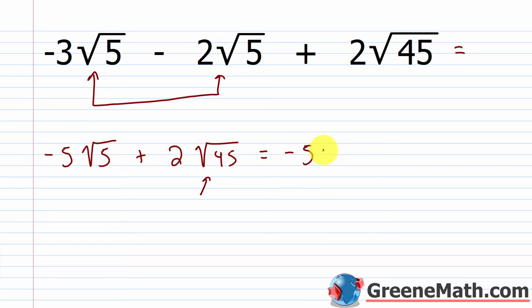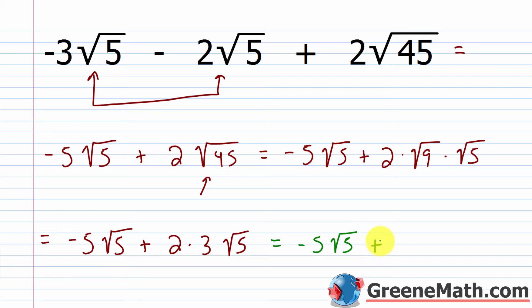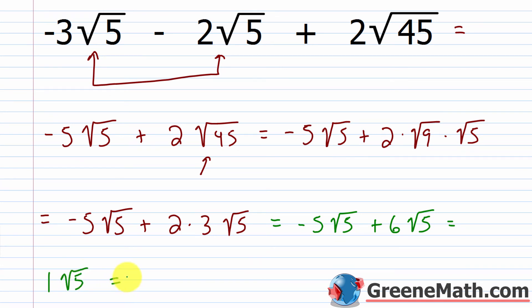So we have negative 5 times the square root of 5 plus 2 times the square root of 9 times the square root of 5. The square root of 9 is 3, so this becomes negative 5 times the square root of 5 plus 2 times 3 — which is 6 — times the square root of 5. Now we have like radicals: negative 5 plus 6 is 1, so the answer is 1 times the square root of 5, or simply the square root of 5.